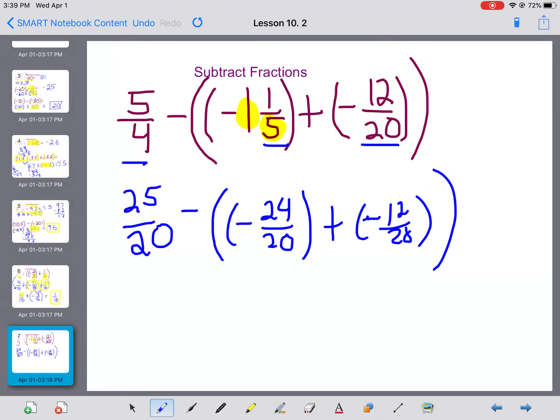That's all within one big bracket. So, negative 24 20ths plus negative 12 20ths actually ends up, because I'm doing what's in the bracket first, I end up with negative 36 20ths.